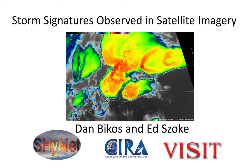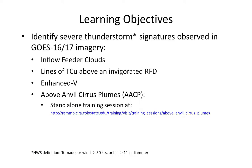Welcome to the training session titled Storm Signatures Observed in Satellite Imagery. My name is Dan Bykus. Ed Zouk assisted me in putting this together. Our learning objectives will be to identify severe thunderstorm signatures observed in GOES-16 or 17 imagery that are typically associated with supercells.